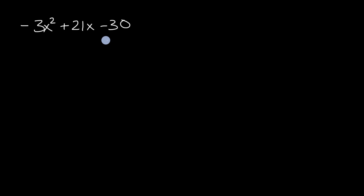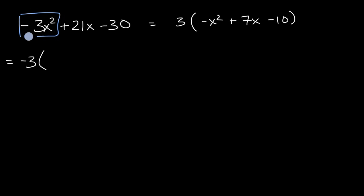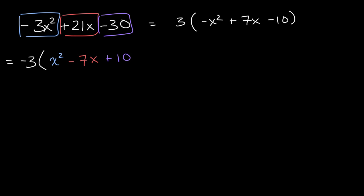Now let's do this together. What would be the greatest common factor? They're all divisible by three, so you could factor out a three. But if you factor out a three, you get three times negative x squared plus seven x minus 10. Having that negative on the x squared term still makes it a little confusing on how to factor further. So instead of just factoring out a three, let's factor out a negative three. If we factor out a negative three, you're left with x squared. Factoring negative three from 21x gives negative seven x, and factoring negative three from negative 30 leaves a positive 10.